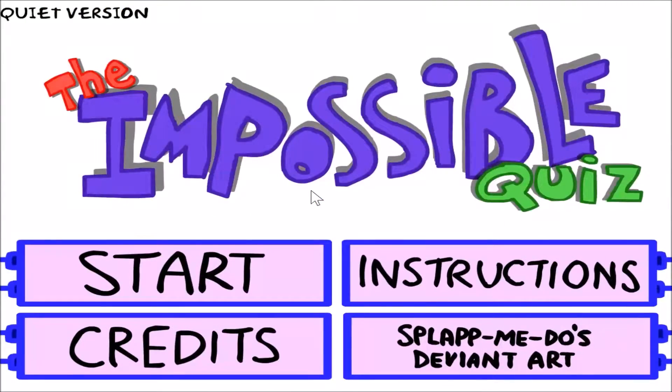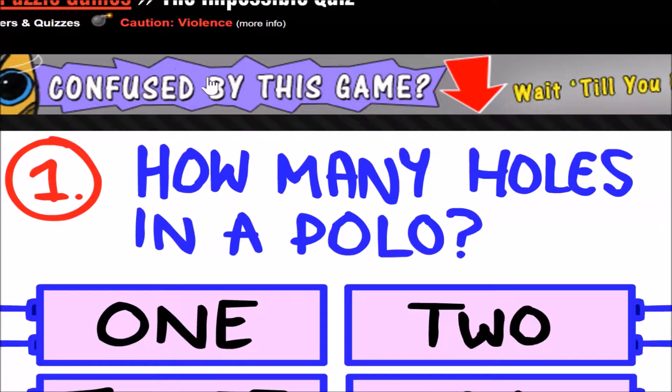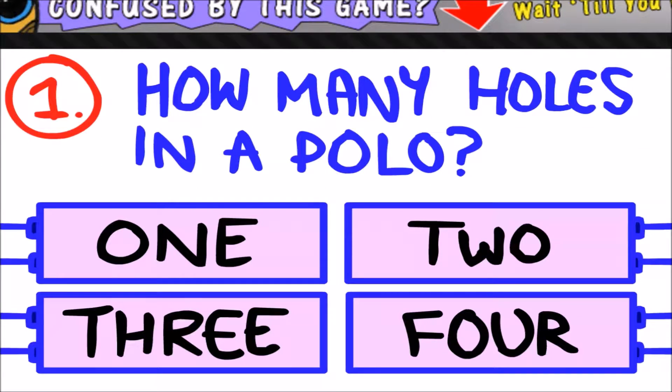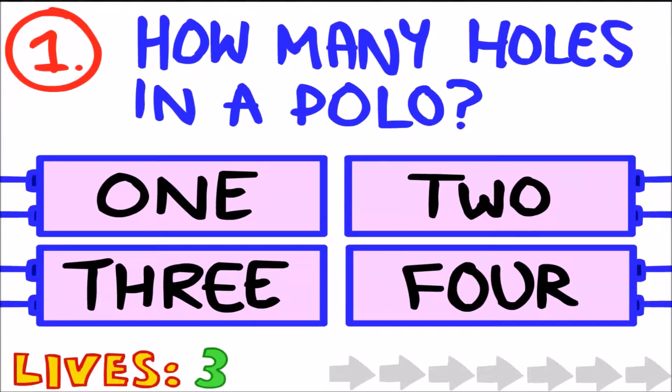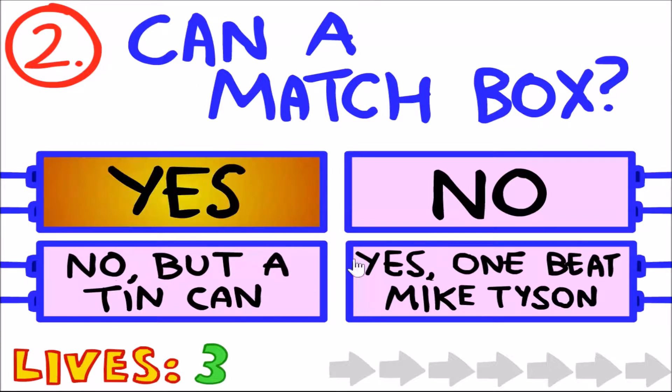And oh god, whatever, let's just get this over with. How many holes in a polo? Now in a polo, hold on, I'll fix this. Okay, so one in the, oh two in the, oh three, four. There are four pole holes. How many holes can a matchbox? Yes, one of course.